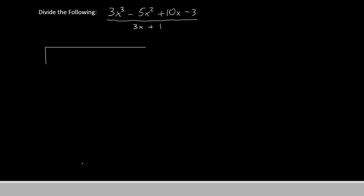Alright, our problem here is to divide 3x to the third minus 5x squared plus 10x minus 3 over 3x plus 1. So I'm going to write the denominator over here on the left, and the numerator on the inside here. And there we go.